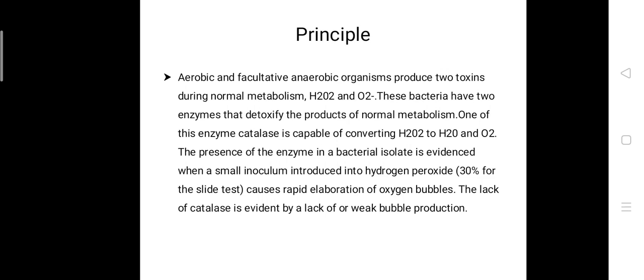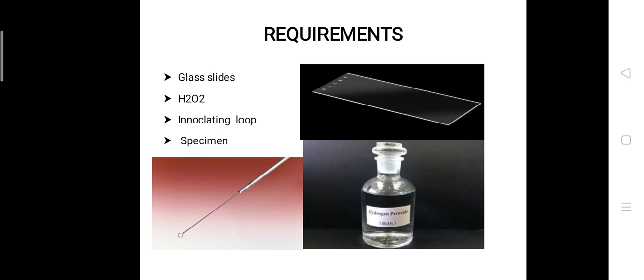When hydrogen peroxide is added into the glass slides, it causes rapid elaboration of oxygen bubbles. To perform this catalase test, we're going to need glass slides, H2O2 which is commercially available, an inoculating loop, and the specimen.